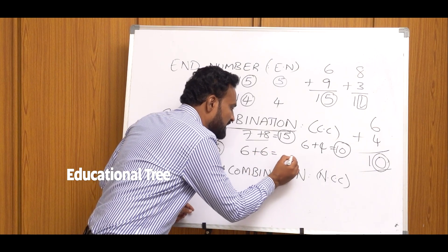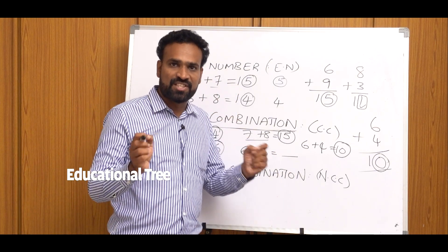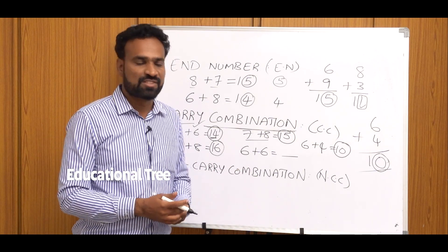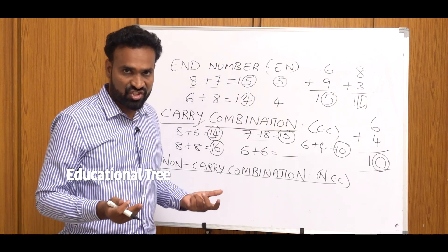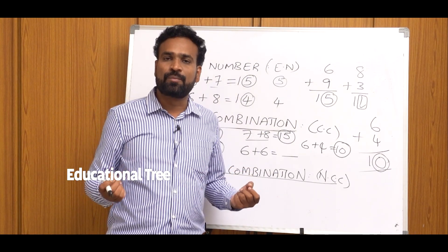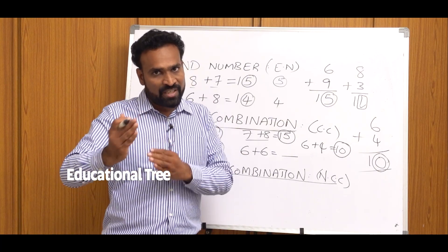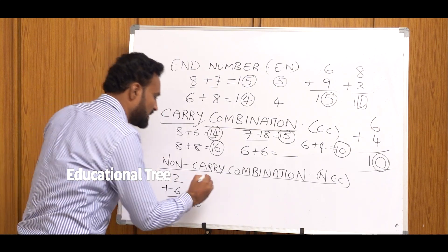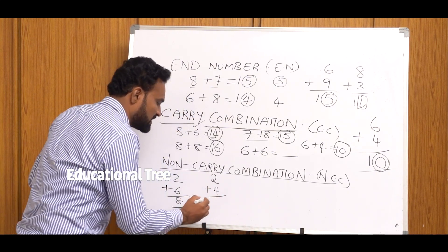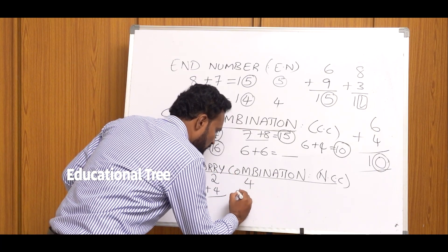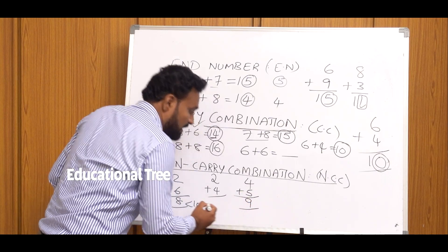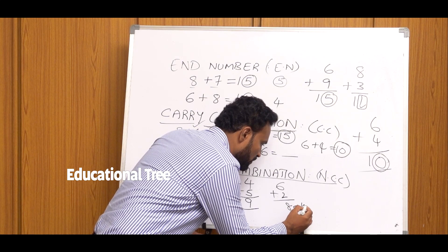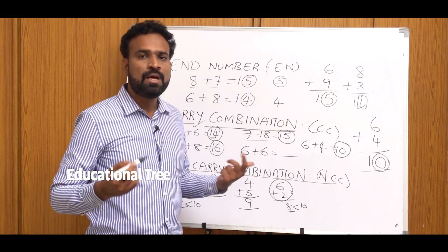When the sum of two single-digit numbers is less than 10, it is a Non-Carry Combination. For example, 2 plus 6 equals 8, which is less than 10 — non-carry. 2 plus 4 is also less than 10 — non-carry. 4 plus 5 is 9, less than 10 — non-carry. 6 plus 2 is less than 10 — non-carry.